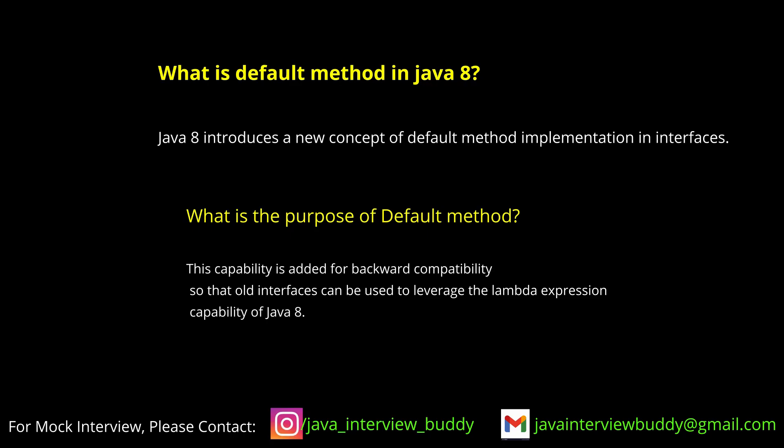What is a default method in Java 8 interfaces? If you override the default method in a class, the overridden version will be called. Otherwise, if you don't override it, the interface's default method itself will be called.